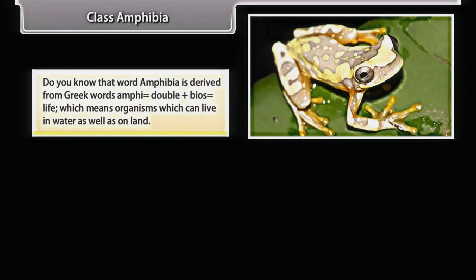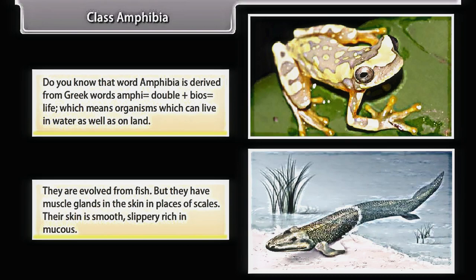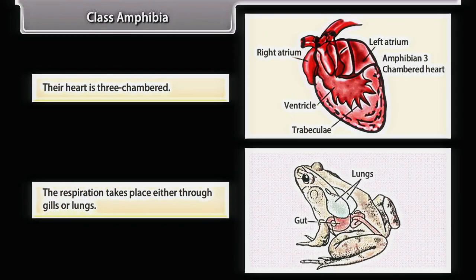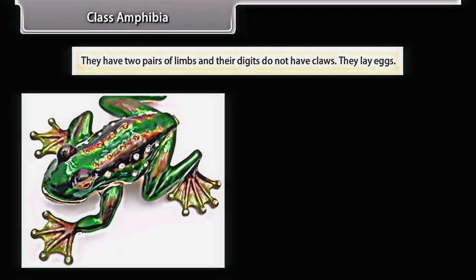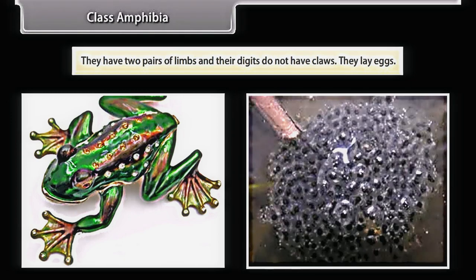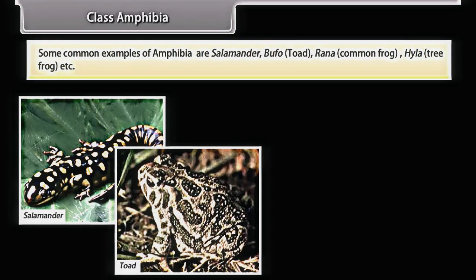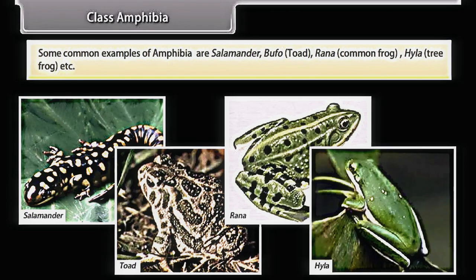Amphibia is derived from Greek words 'amphi' (double) and 'bios' (life), meaning organisms that can live in water as well as on land. They evolved from fish but have mucus glands in the skin in place of scales — their skin is smooth, slippery, and rich in mucus. Their heart is three-chambered. Respiration takes place through gills or lungs. They have two pairs of limbs and their digits do not have claws. They lay eggs. Common examples are Salamander, Bufo (toad), Rana (common frog), and Hyla (tree frog).